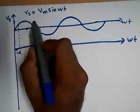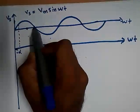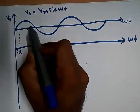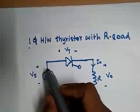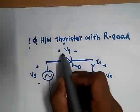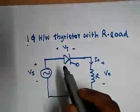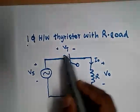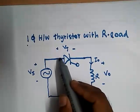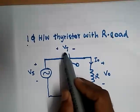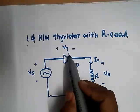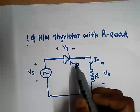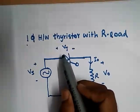We consider first the positive half cycle of the supply. In this positive half cycle, what is the condition of the thyristor VT? When the supply voltage is positive, this thyristor is forward biased. A thyristor has three modes: forward blocking mode, forward conduction mode, and reverse blocking mode. The voltage across VT is a forward bias voltage, but it is not triggered yet, so it is in forward blocking state.